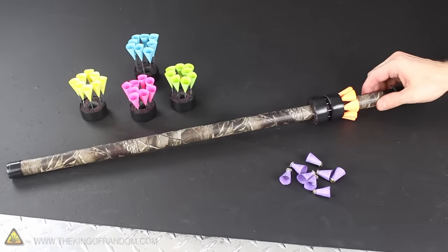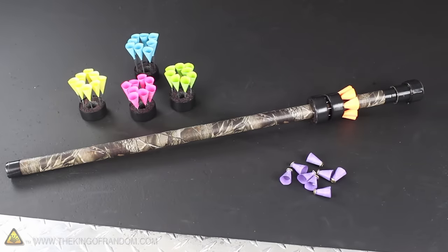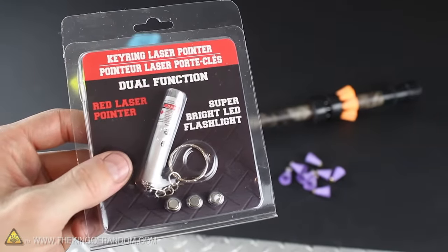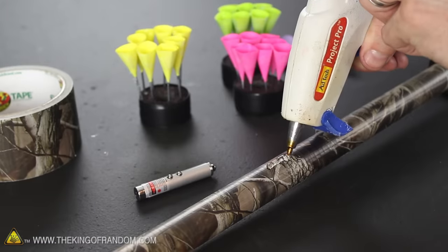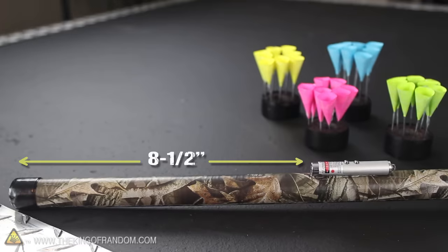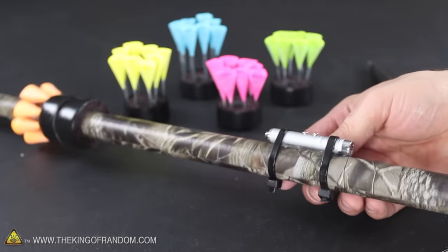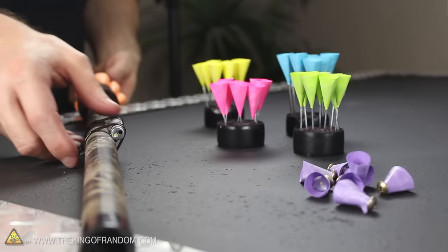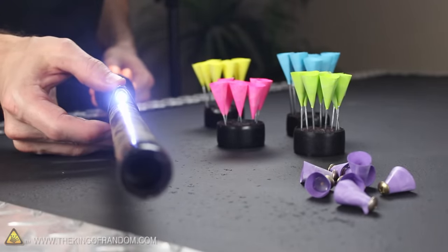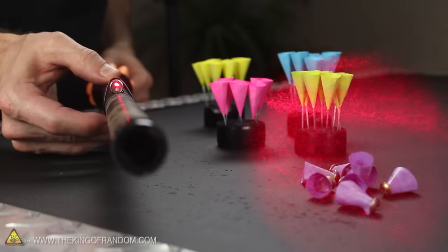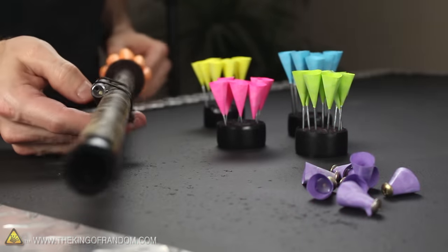Alright our customized blowgun is looking pretty impressive, and we could stop here, but let's go one step further and give it a laser. I picked up a red laser pointer from the dollar store and hot glued it 8.5 inches back from the tip of the barrel. Then reinforced it with a couple of zip ties for durability. The thing I like best about these $1 lasers are how one button operates an LED flashlight, while the other activates a laser sight, making this system operable in the dark.